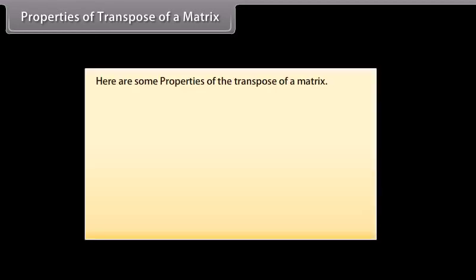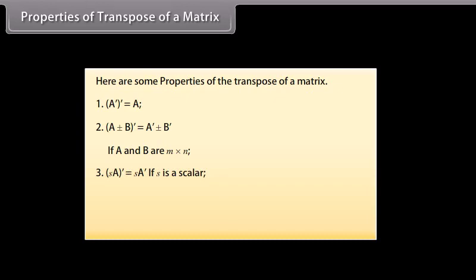Properties of transpose of a matrix. First, transpose of transpose of matrix A is equal to matrix A. Second, transpose of (A ± B) is equal to transpose of A ± transpose of B, if A and B are M×N. Third, transpose of (s × A) is equal to s × transpose of A, if s is a scalar. Fourth, transpose of (AB) is equal to transpose of B × transpose of A, if A is M×N and B is N×P.